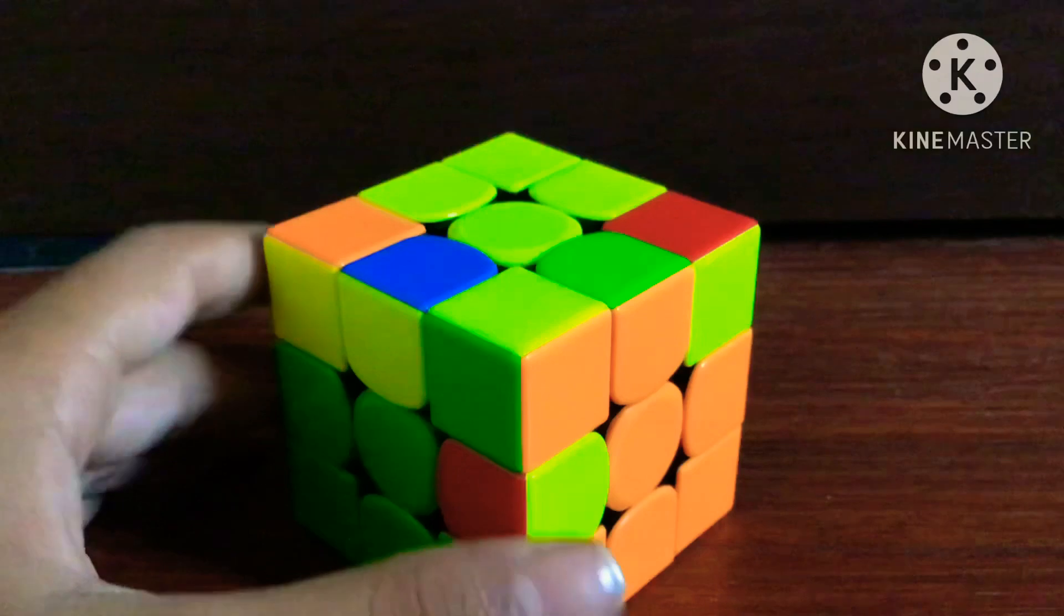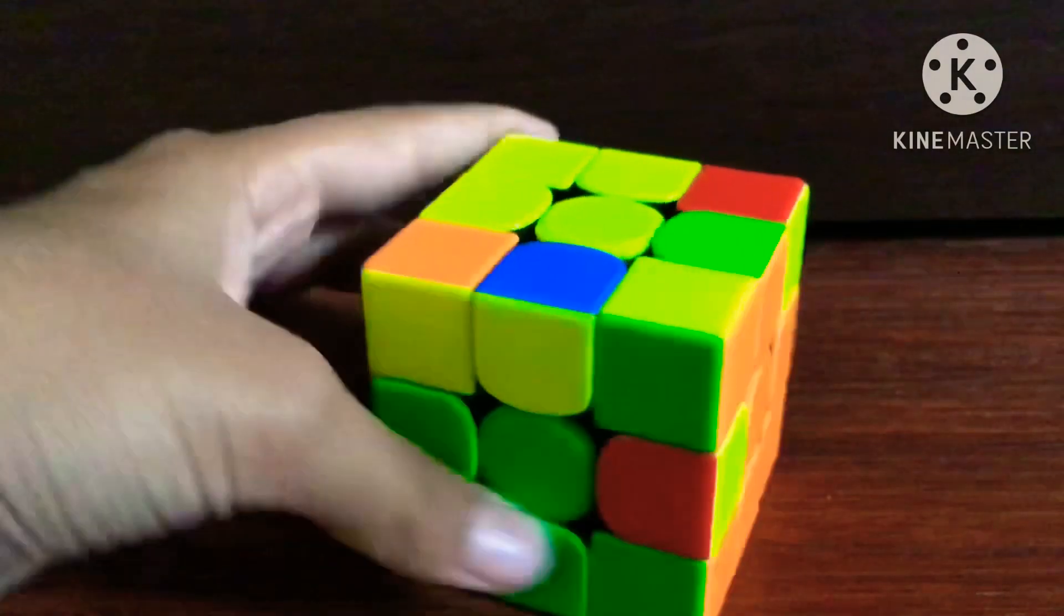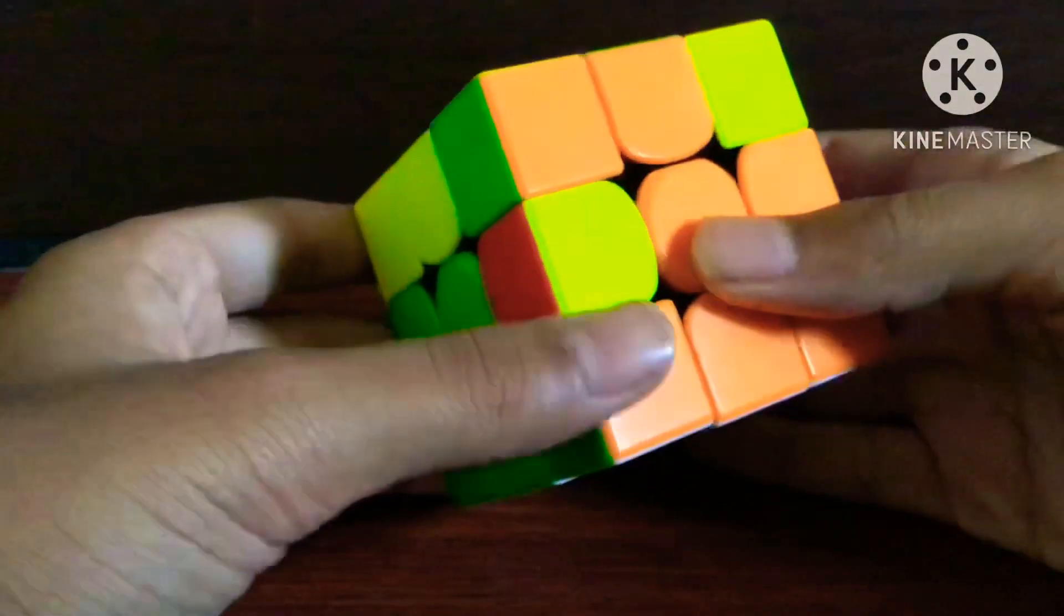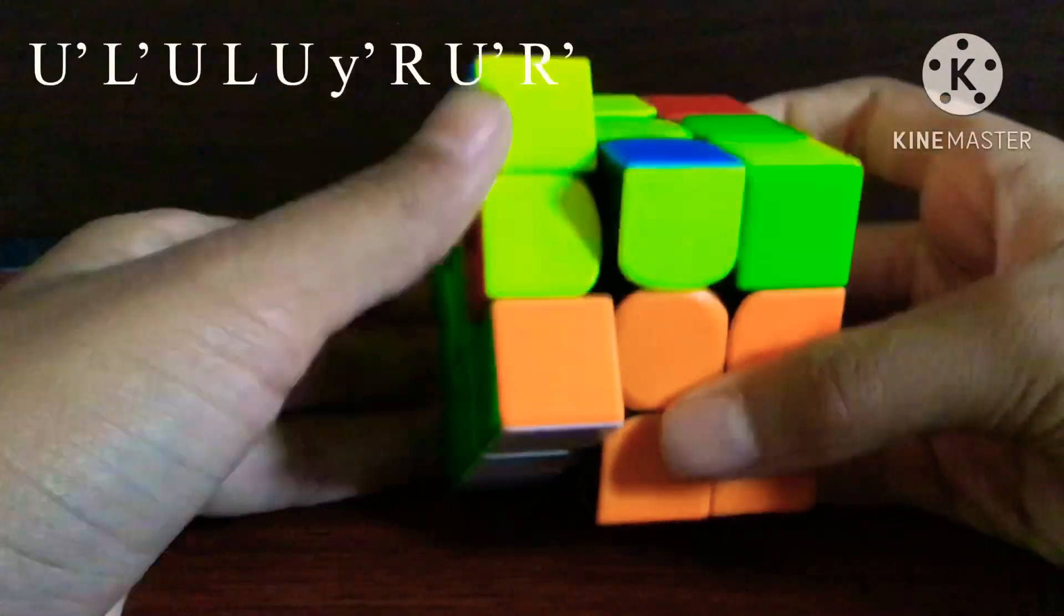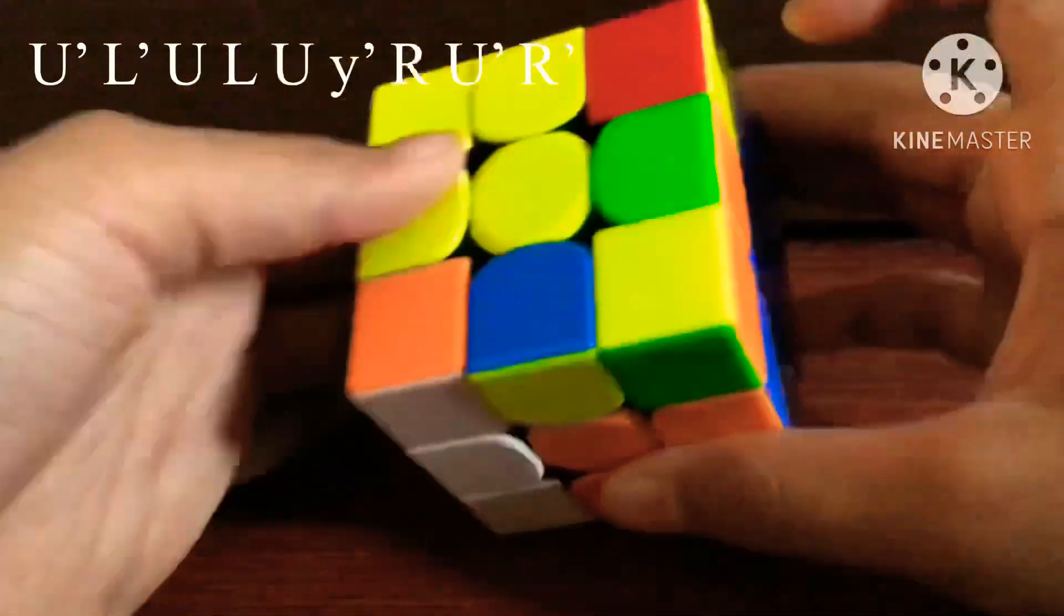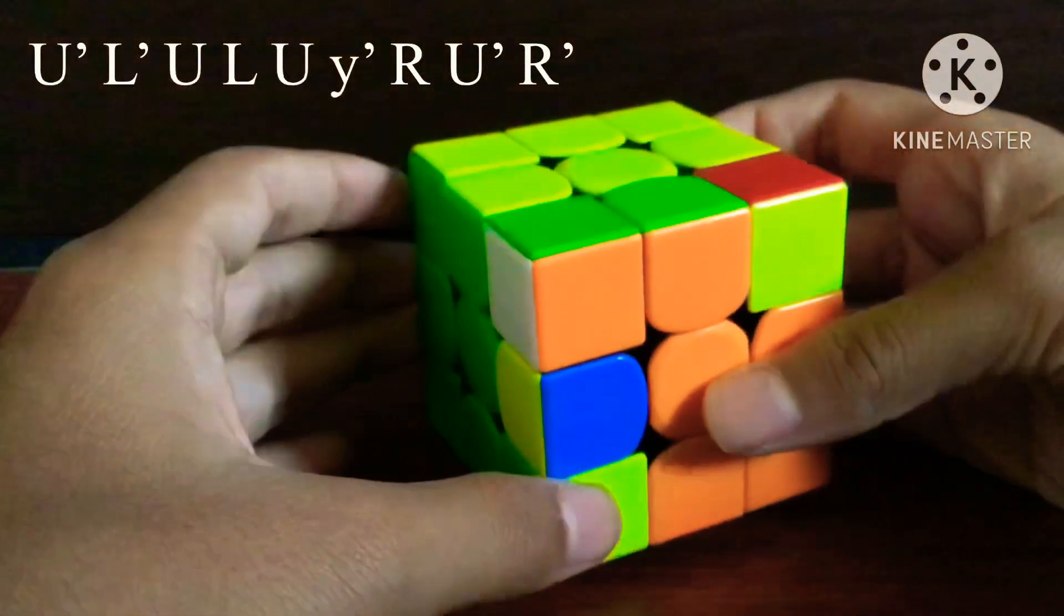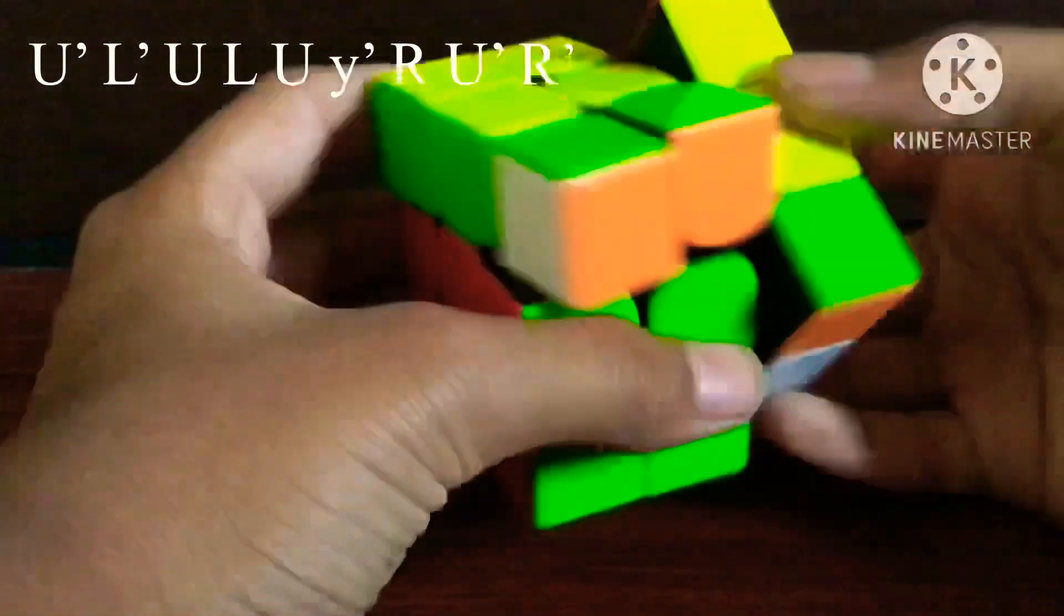So the next case is similar, but instead of the L being near you, it's away from you. So in this way we start off the same: push it away, put this one up, and instead of doing this move we have to do the opposite, and then put it down. Now we can just insert this as a pair.